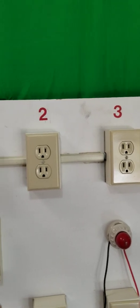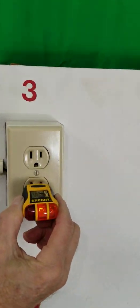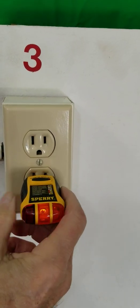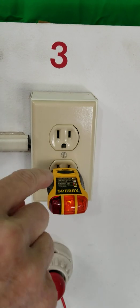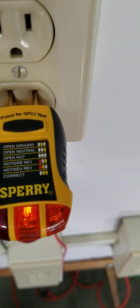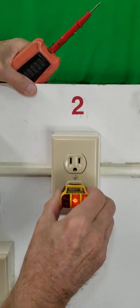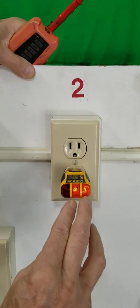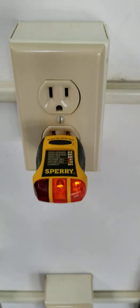I'll now use a tester. If I plug it into this guy, it's showing that one light in the center is on. And that indicates, according to the scale you have here on the side, that it's an open ground. If I go to the second receptacle, it shows that two lights are lit, and it says that it's properly wired.